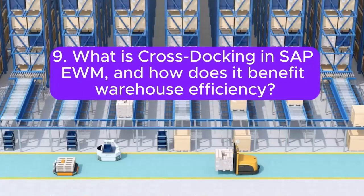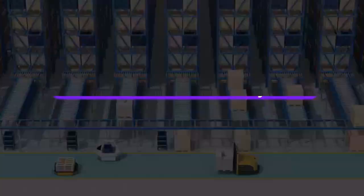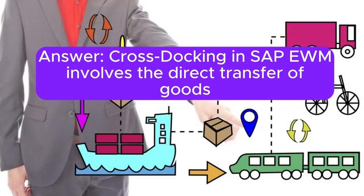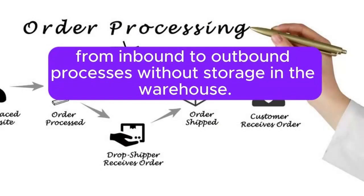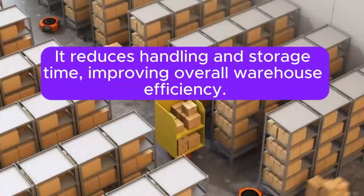Question 9: What is cross-docking in SAP EWM and how does it benefit warehouse efficiency? Cross-docking in SAP EWM involves the direct transfer of goods from inbound to outbound processes without storage in the warehouse. It reduces handling and storage time, improving overall warehouse efficiency.